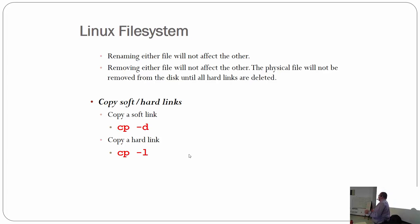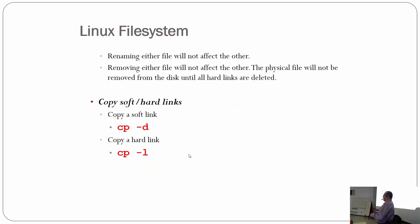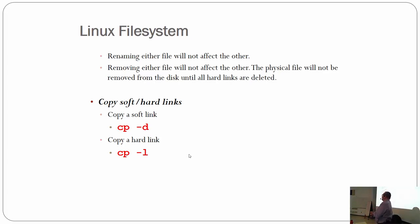There are a few copy parameters related to links. You can copy a soft link using the -d argument, and copy a hard link using the -l argument with cp. If you copy a soft link, it creates another soft link pointing to the same place. If you copy a hard link, it creates another hard link — which means to truly delete the original, you'd need to remove all copies of the hard link as well.